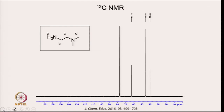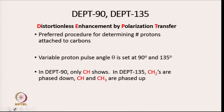The 13C carbon nucleus is also NMR active, so we can look at 13C NMR. There are three different kinds of carbon in this compound — B, C, and D — where the two CH3 groups are equivalent. You expect three peaks, and that is what you see: chemical shifts at 62.76, 45.68, and 39.68 ppm. To assign which carbon gives which peak, we need to do another experiment called the DEPT experiment.